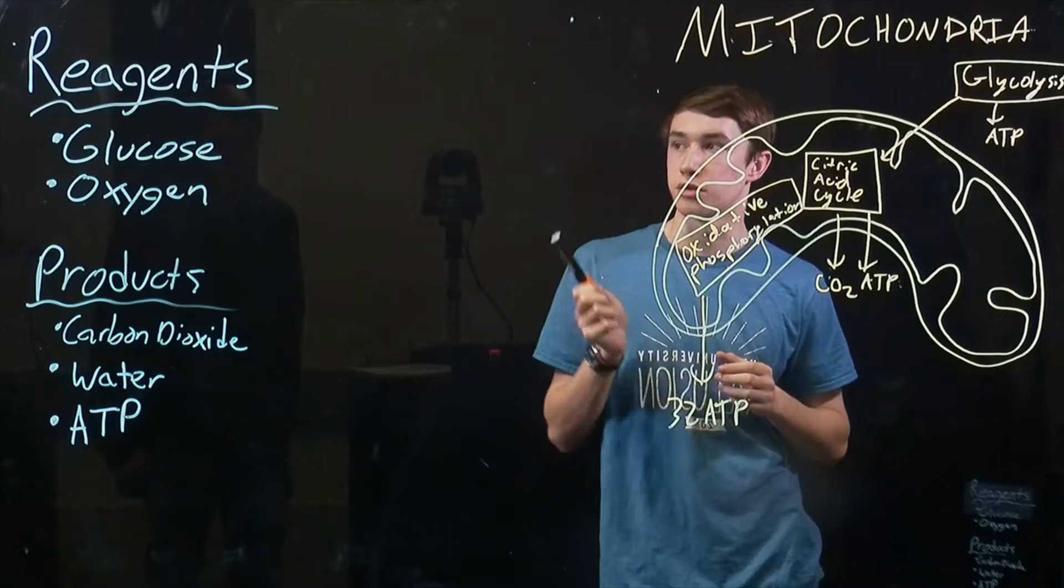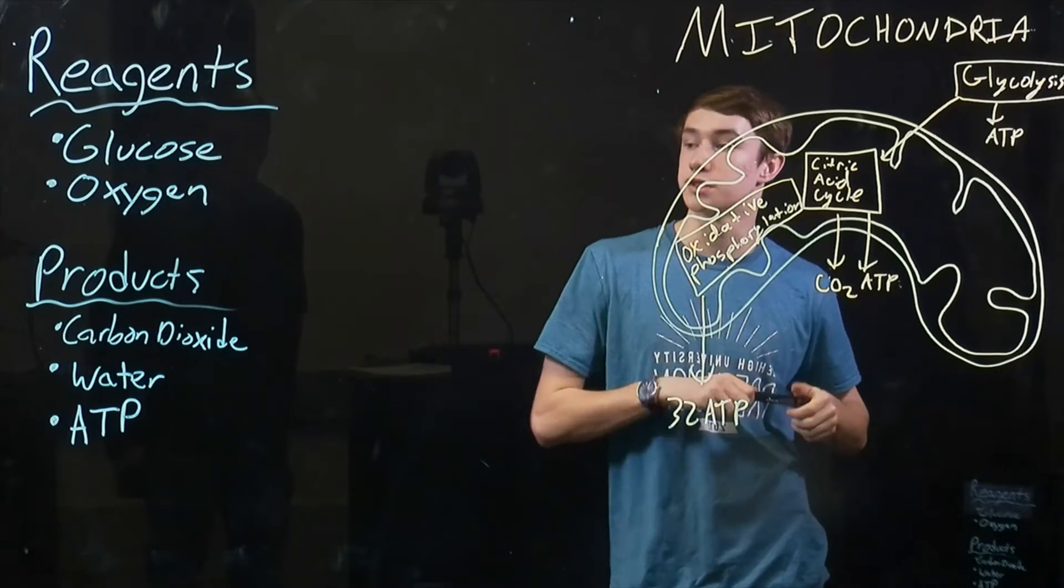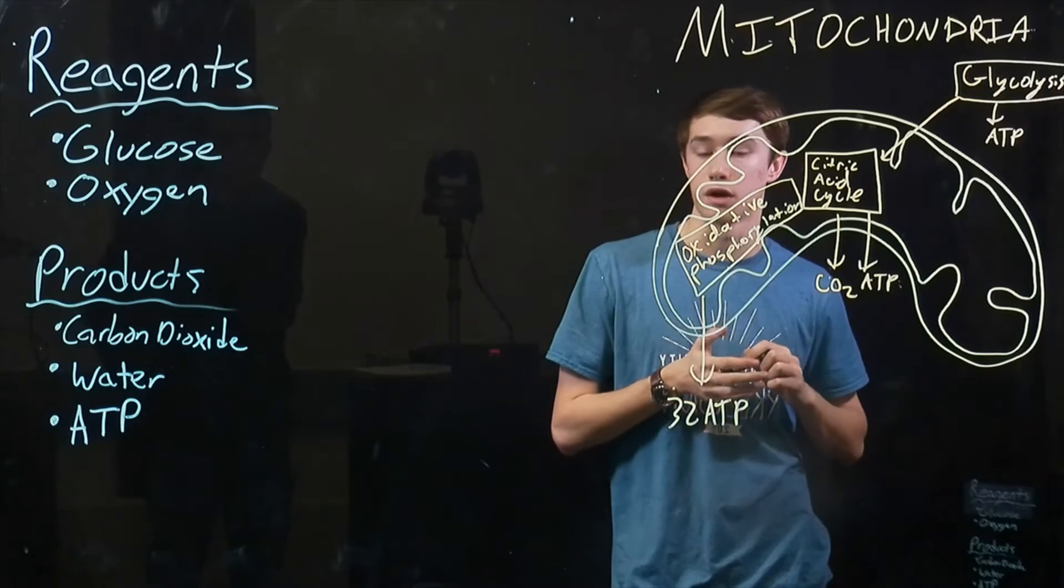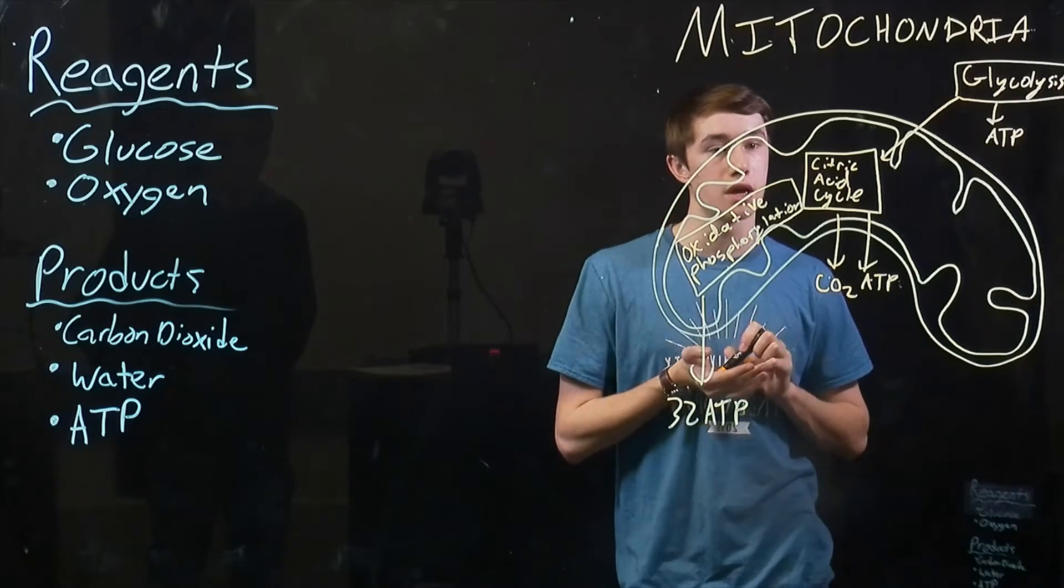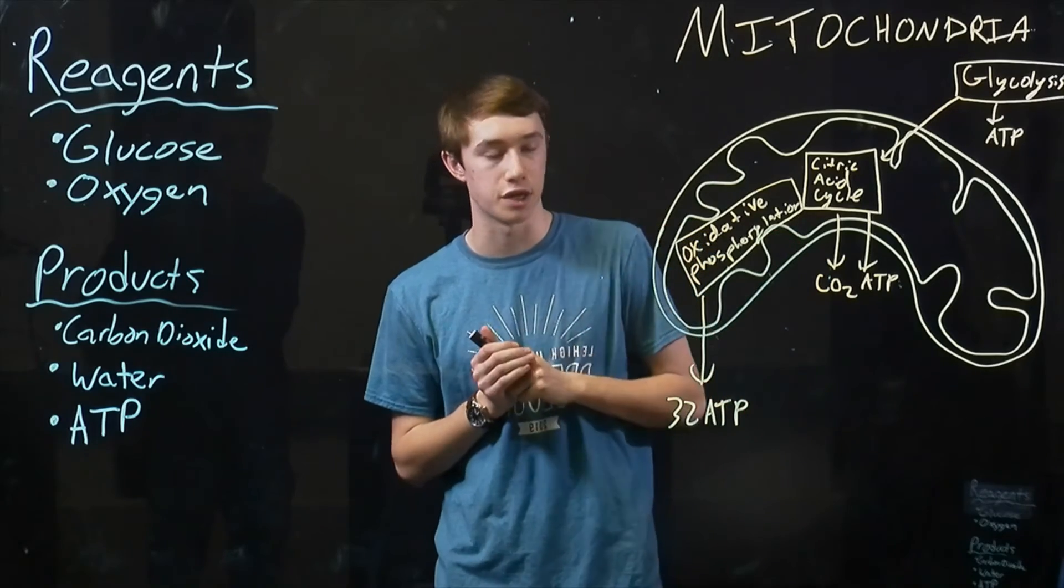The main reagents and products in cellular respiration, we've got glucose and oxygen for the reagents, and carbon dioxide, water, and obviously ATP for products. And this carbon dioxide is actually coming from the citric acid cycle here.